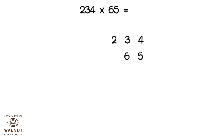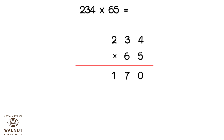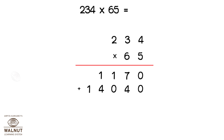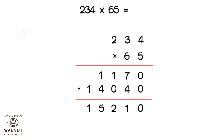We write the numbers one below the other. Multiply 234 by 5, then put in the 0, and multiply 234 by 6. Add the products, and we get our answer. The method is exactly the same.